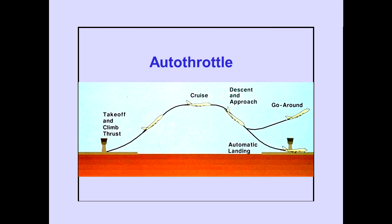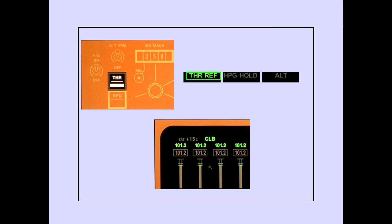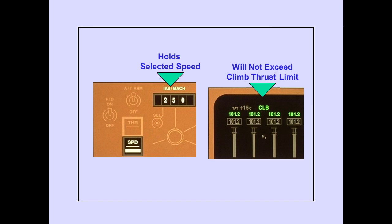Let's review our discussion of the autothrottle. The autothrottle is a full-time system which can be operated from the start of the take-off roll through an automatic landing or go-around. The thrust and speed switches affect only the autothrottle. The VNAV and flight level change switches affect the autothrottle and autopilot flight director pitch control. When thrust is selected, the autothrottle holds the selected climb thrust. In the speed mode, the autothrottle holds the speed set in the IAS mock window, but will not exceed the thrust limit of the selected thrust mode.